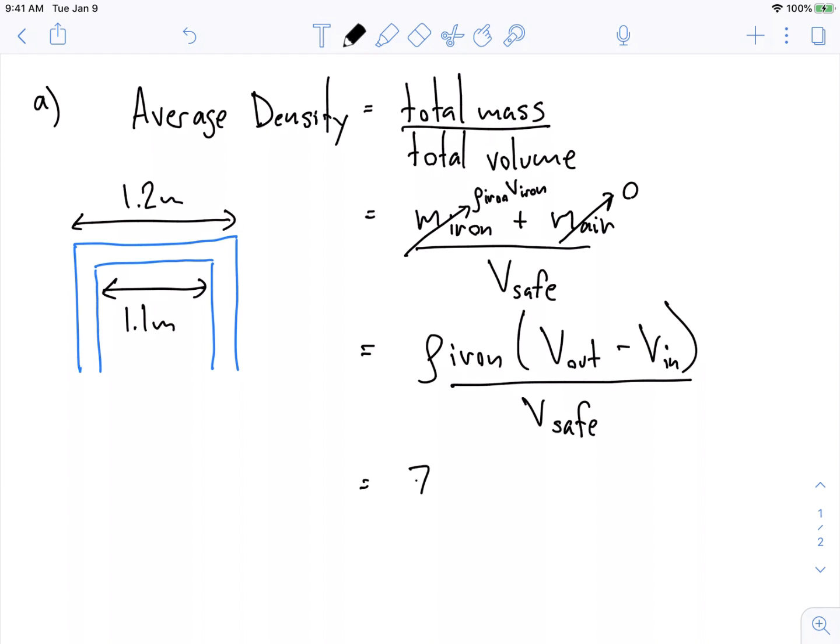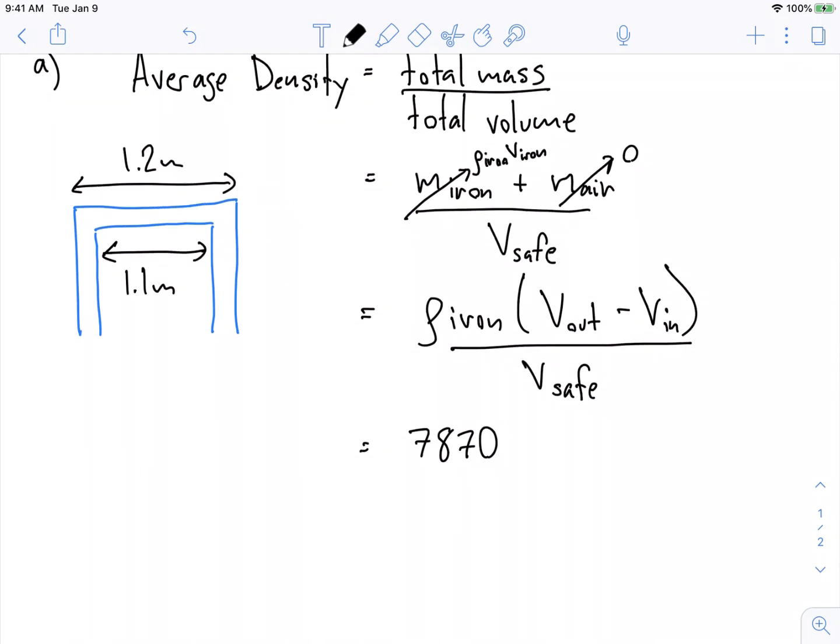I'm going to do something here that's called suppressing the units. So normally I'd write units after this number, but you know, when you're starting to do a complicated calculation, the units can really get in the way. So I'm just going to remember that they're in kilograms per meters cubed and I'm going to restore the units at the end of the question.